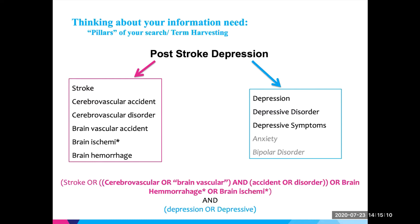In addition to keywords, we want to think about subject headings. When searching with keywords, we're thinking about what words people use in their title or abstract. But in many databases, subject headings are added by indexers — at the National Library of Medicine in PubMed's case. We want to figure out what those subject headings are and include them in our search. We also want to think about search fields. If a search is returning too many results, we might change from searching title and abstract to searching title only, and use that to our advantage.